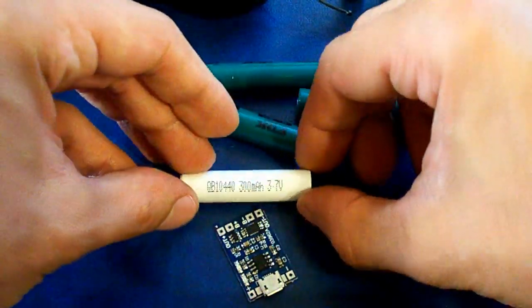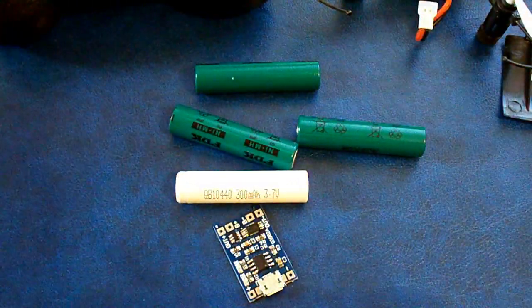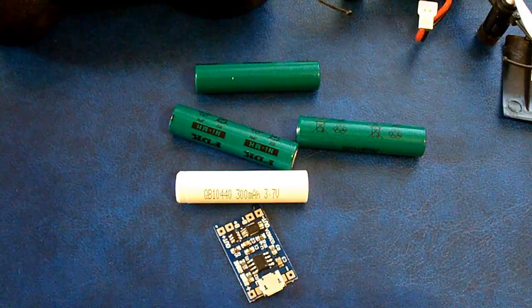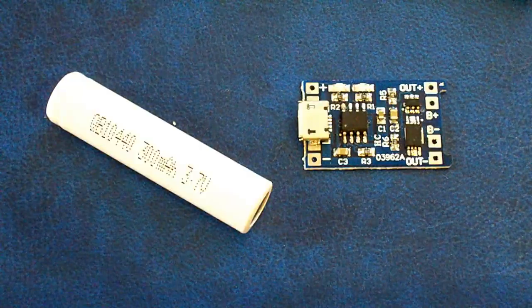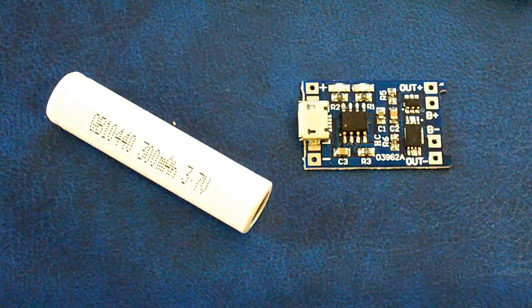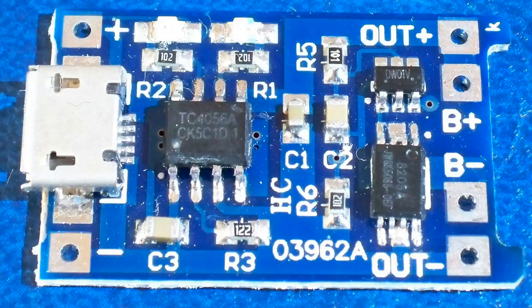Recently I tested a Queen battery QB10440 cell which is also a AAA size battery but has 3.7 volts nominal voltage. I'm gonna use it with a TC4056A charging board with integrated battery protection, but I have to slightly modify it.